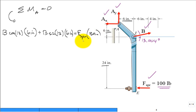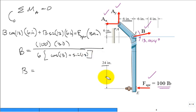Finally, I have one equation, one unknown. B is equal to 100 times 30 divided by six times cosine of 13 plus the sine of 13. 416.927 pounds. So there you go. We solve for B.